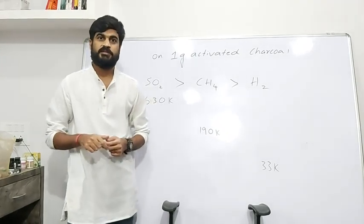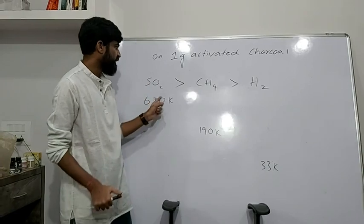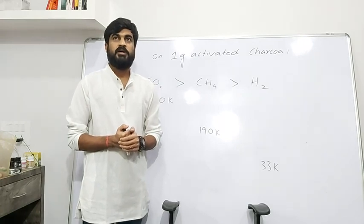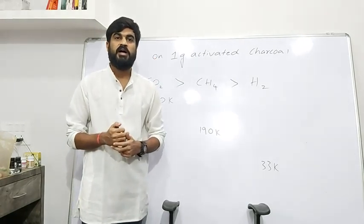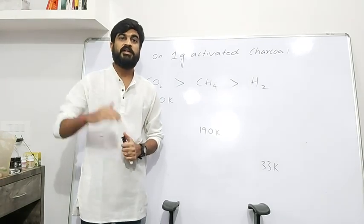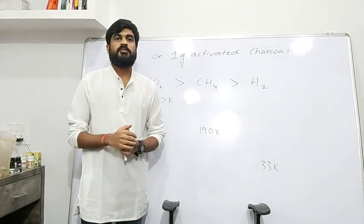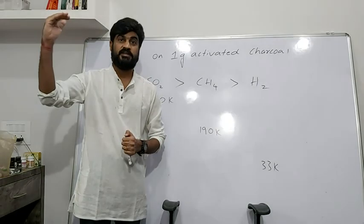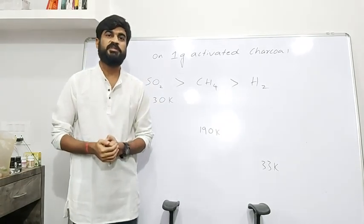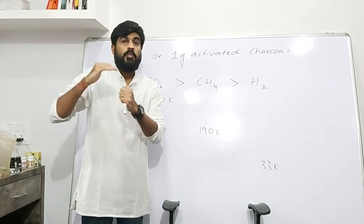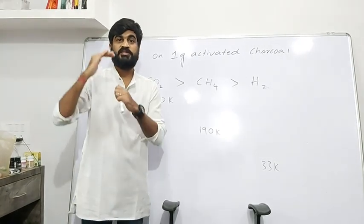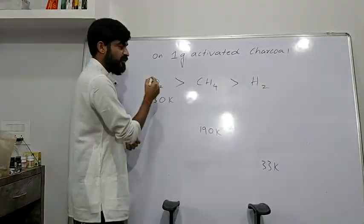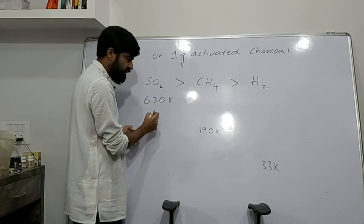The critical temperatures of these gases are higher for SO₂ than for methane. Critical temperature is the temperature above which no liquefaction takes place. Sulfur dioxide has a critical temperature of around 630 Kelvin, and methane has a critical temperature of around 191 Kelvin.